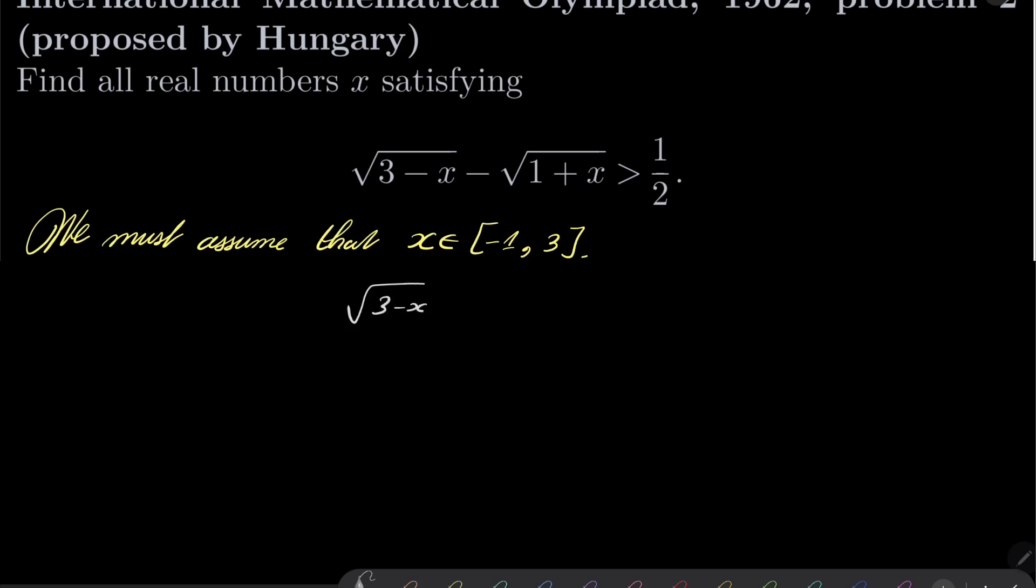square root of 3 minus x greater than 1 half plus square root of 1 plus x. Notice that both sides are non-negative, so we can square both sides,